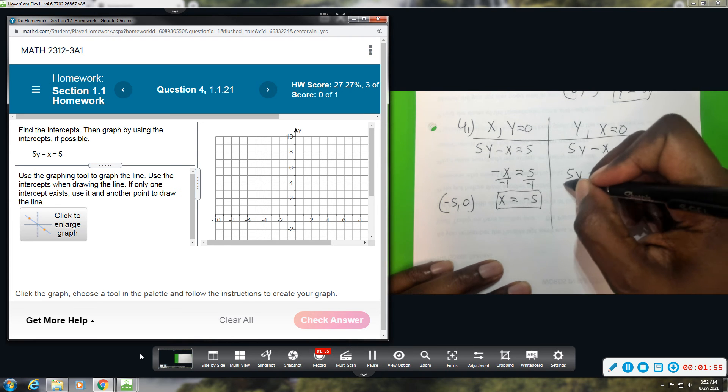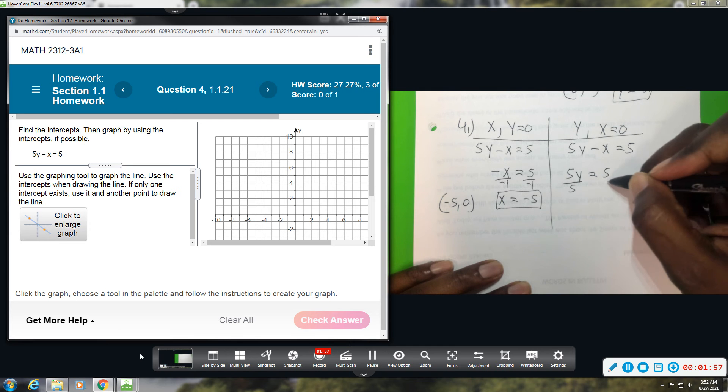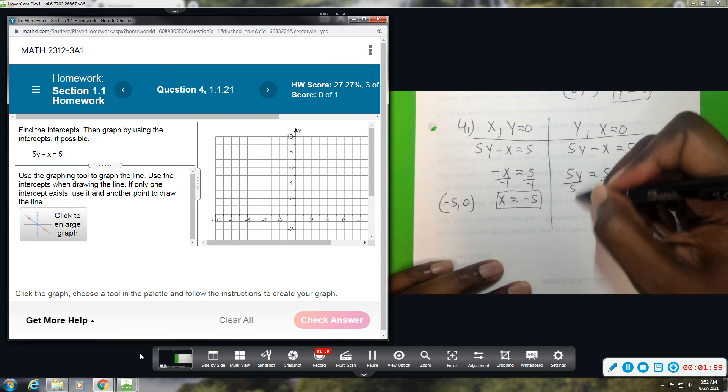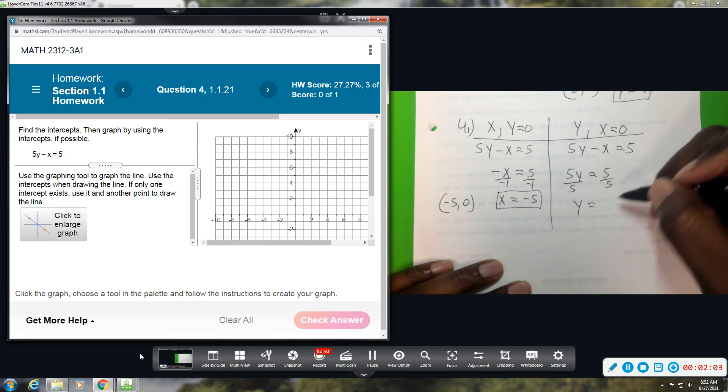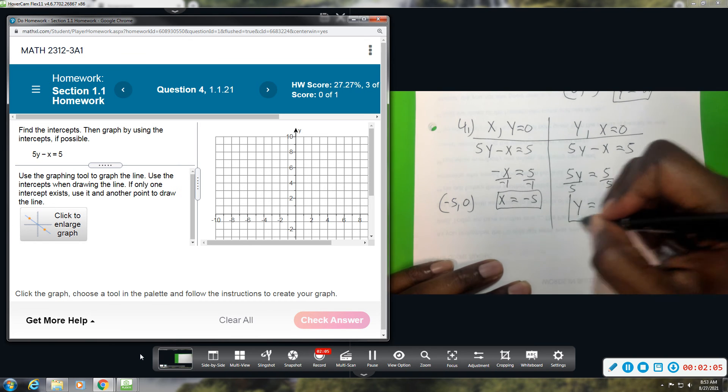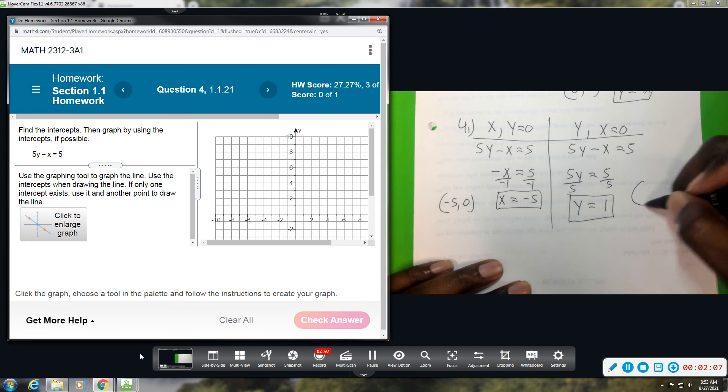Again, isolate your variable, divide by 5 here. So 5 divided by 5 is 1, so you just have 1y, and 5 divided by 5 is 1. So your y value is 1. As an ordered pair, you have the ordered pair 0, 1.